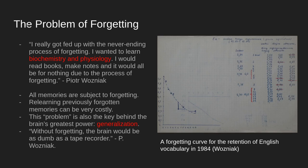The problem of forgetting was the impetus for Wozniak to develop spaced repetition. He got fed up with the never-ending process of forgetting while trying to learn biochemistry and physiology — he'd read books, make notes, and it would all be lost. All memories are subject to forgetting, even ones you feel you'd remember for a lifetime. This can be shown on a simple forgetting curve: on day zero, recall probability is near 100%, but over subsequent days the memory's strength slowly declines until retrieval becomes very unlikely.